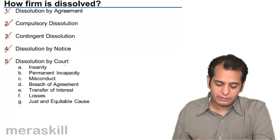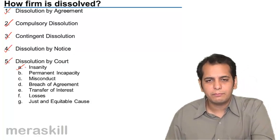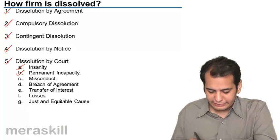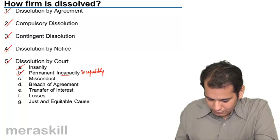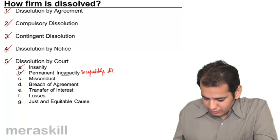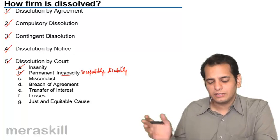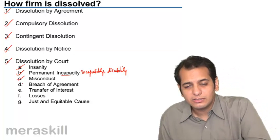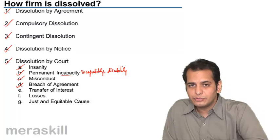Insanity of one of the partners, permanent incapacity - incapacity means disability. So if one of the partners becomes disabled, misconduct - if the partner's conduct is not correct, there is continuous breach of the agreement of partnership.